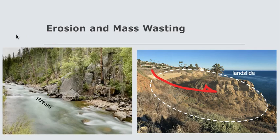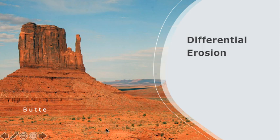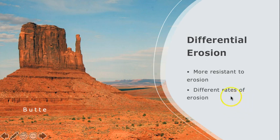Once rock has been weathered, it is susceptible to mass wasting and erosion. Erosion is the removal and transportation of weathered rock and sediment. Running water is the most common agent of erosion, but glacial ice, wind, and waves can also do erosion. Mass wasting is the downslope movement of weathered material, and like erosion, it is a process driven by gravity. Differential erosion describes the phenomenon that some types of rock or certain layers within a sequence of layered rock are more resistant to erosion than others. This results in different rates of erosion and the formation of distinct landforms, such as this butte in the photograph.